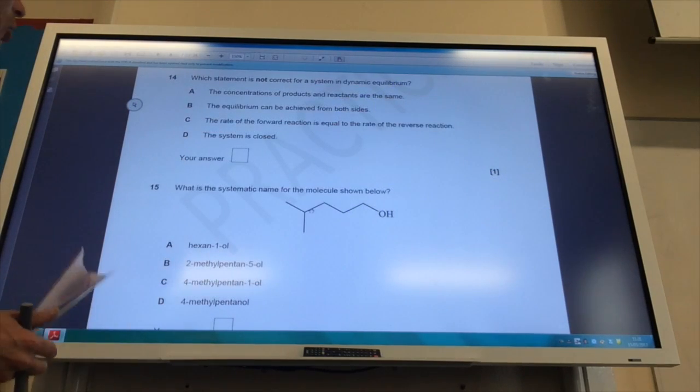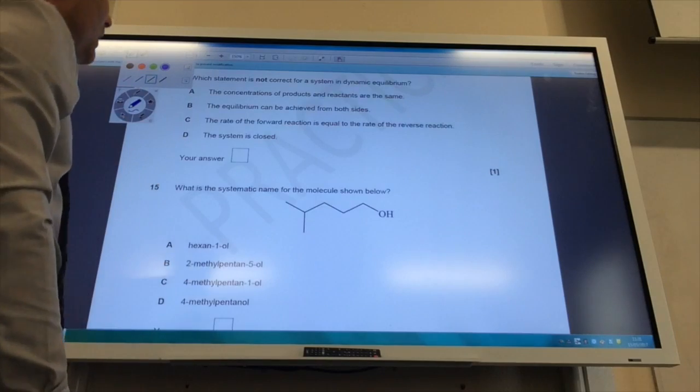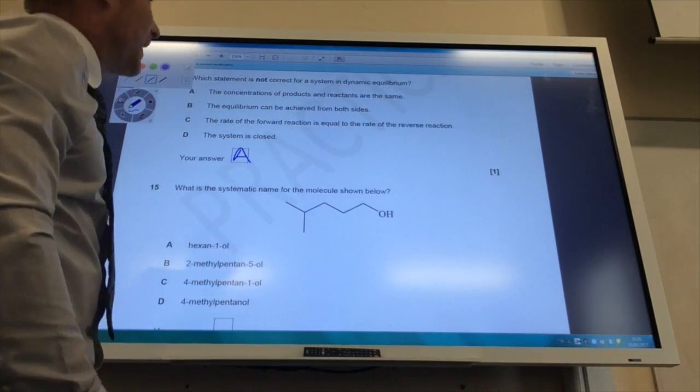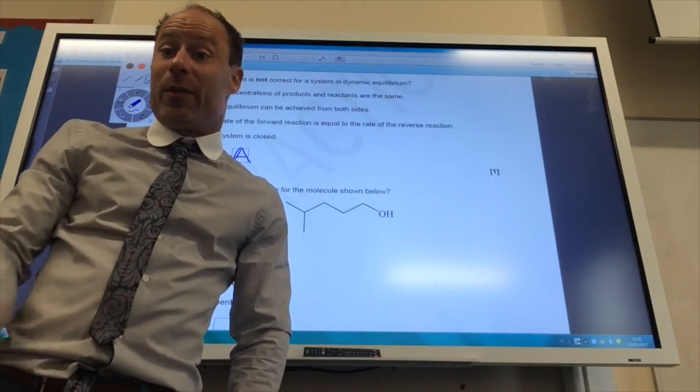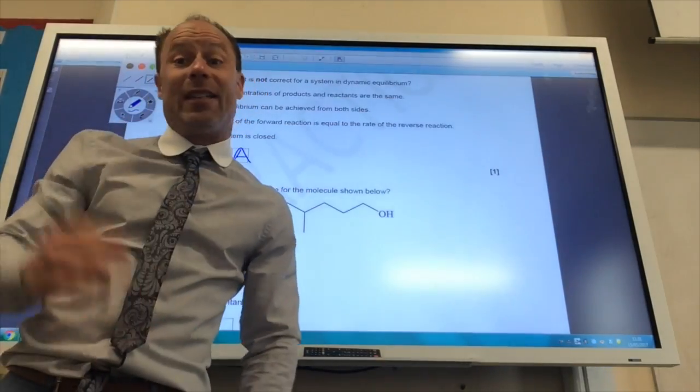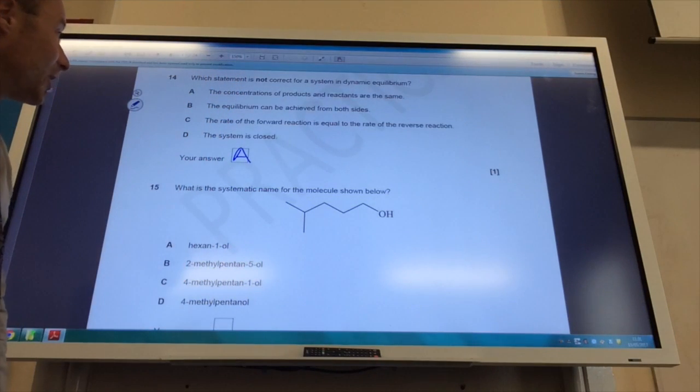Which statement is not correct for a system in dynamic equilibrium? It's A. The concentration of the products and reactants are the same. They're not the same. The position of equilibrium can be over to the left, over to the right. It's not 50-50 reactants and products. So the answer is A.